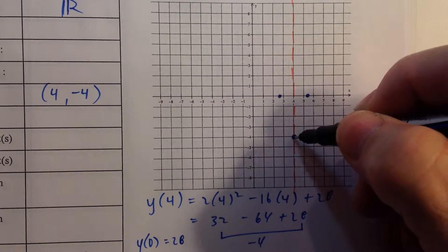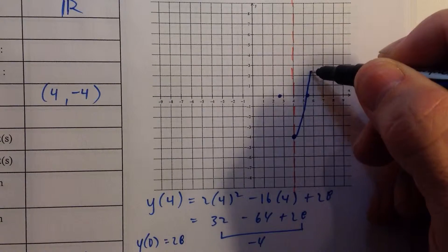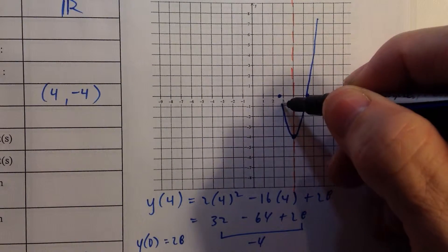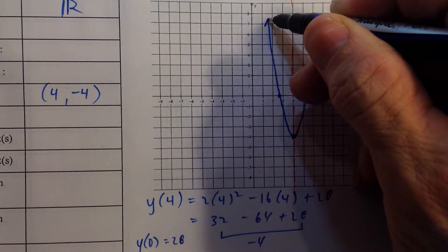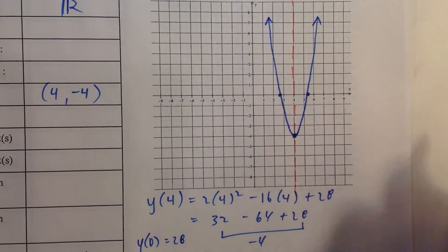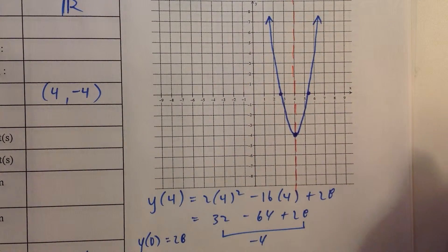So we're going to go up from left to right here. And from the vertex, we know we go up. And so that is our graph of our function.